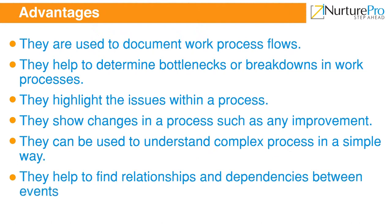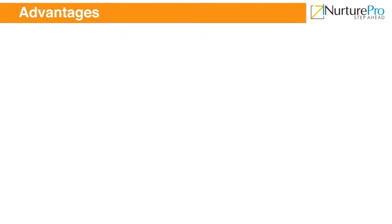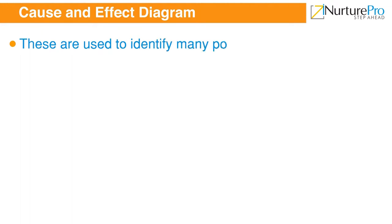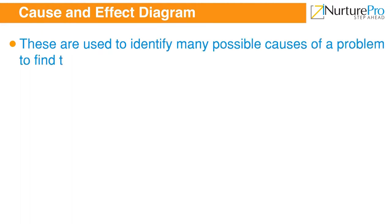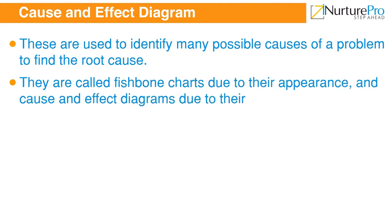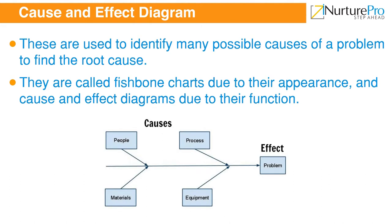Cause and effect diagrams are used to identify many possible causes of a problem to find the root cause. They are called fishbone charts due to their appearance, and cause and effect diagrams due to their function. They can be used in manufacturing and services industries.